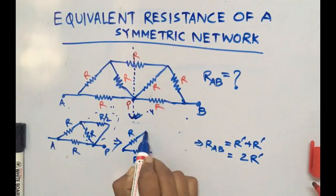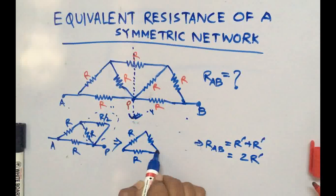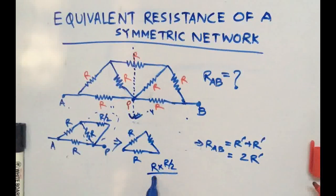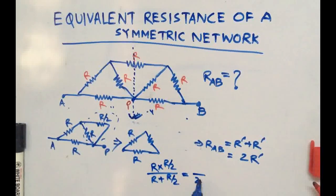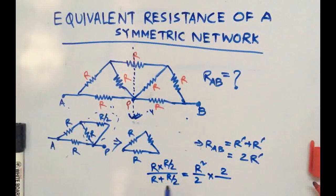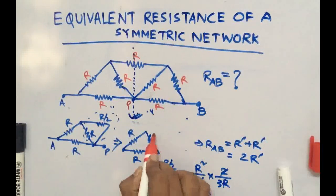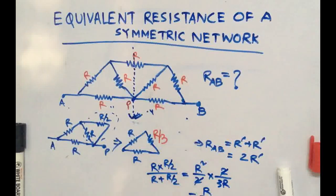The equivalent of R in parallel with R/2 is: (R × R/2) / (R + R/2), which gives (R²/2) / (3R/2) = R/3. So this parallel combination gives us R/3.